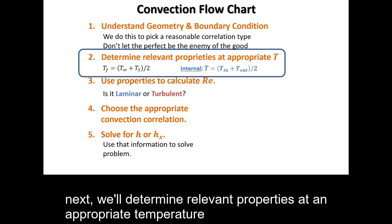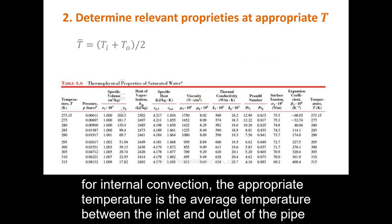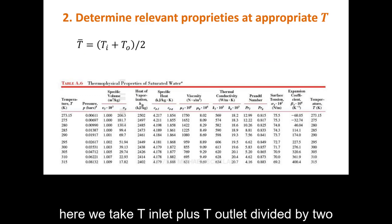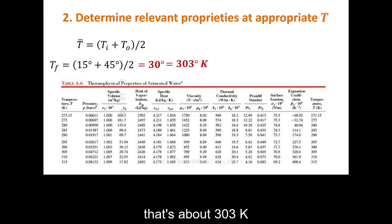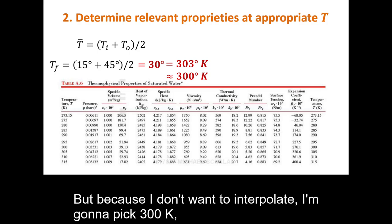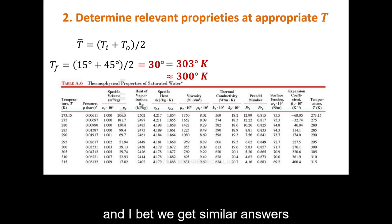For internal convection, the appropriate temperature for evaluating fluid properties is the average of the inlet and outlet temperatures. Taking T_inlet plus T_outlet divided by 2 gives us 30 degrees Celsius, which is about 303 K. I'll use 300 K to avoid interpolation — you could also use 305 K from Table 8.6 and would get similar answers.